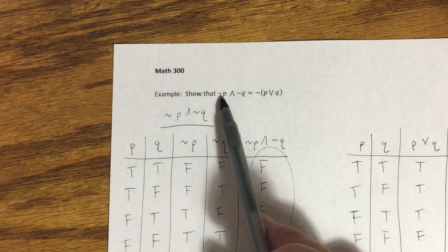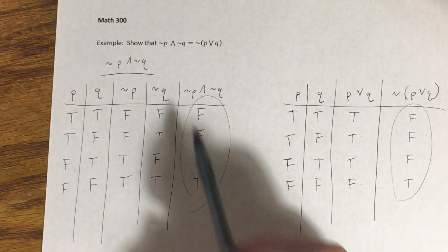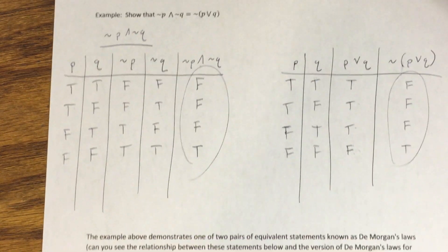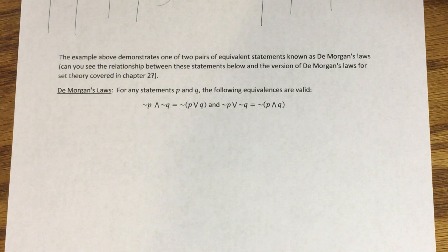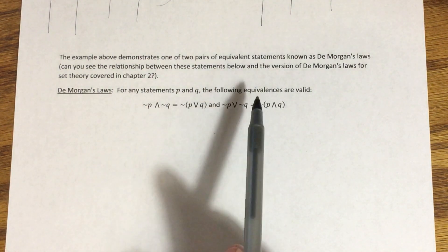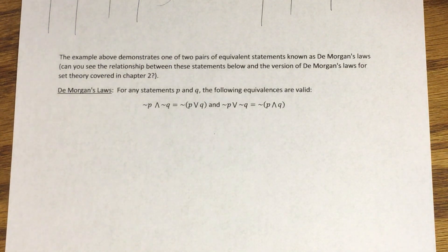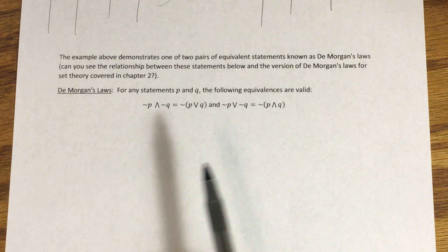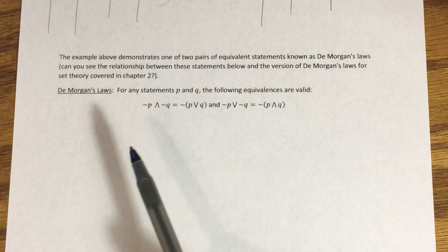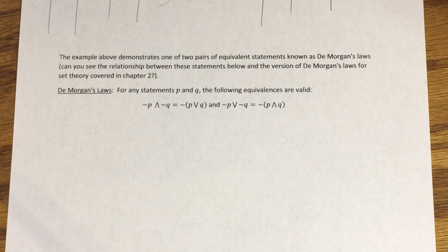These two statements are equivalent — this is one of two important laws called DeMorgan's laws. This should sound familiar from the set theory chapter. The difference is that instead of complements, we use negations; and instead of intersections and unions, we use conjunctions and disjunctions. Those concepts are closely related: for example, the union of sets A and B is the set of elements in A or B — and 'or' is one of our logical connectives.